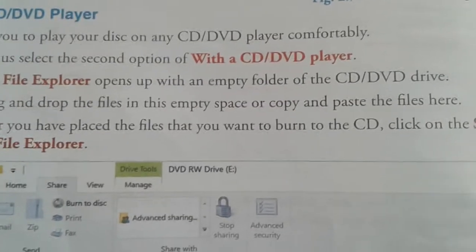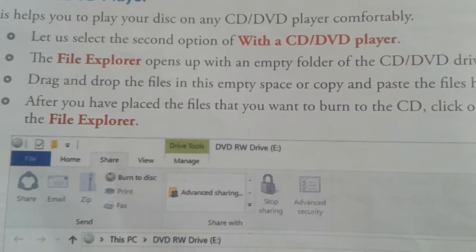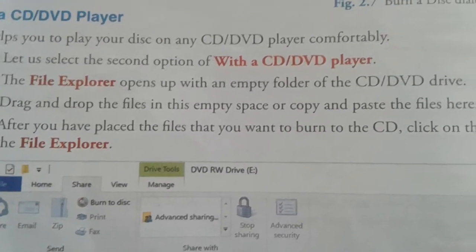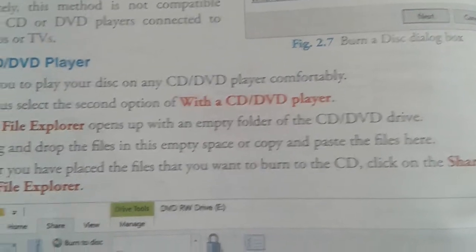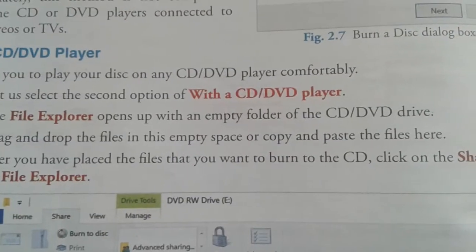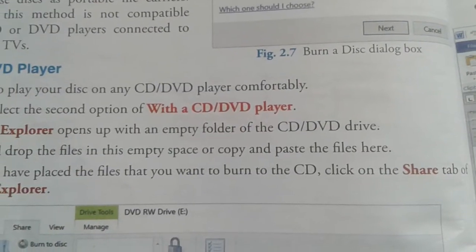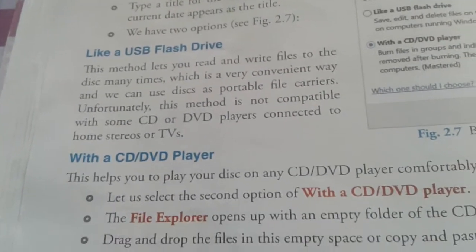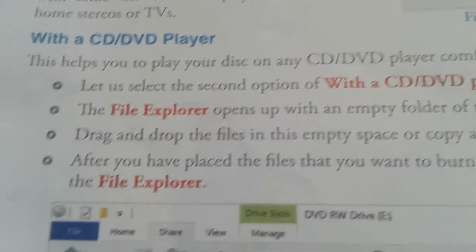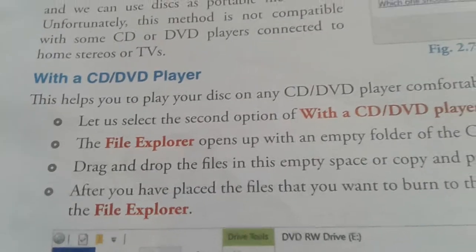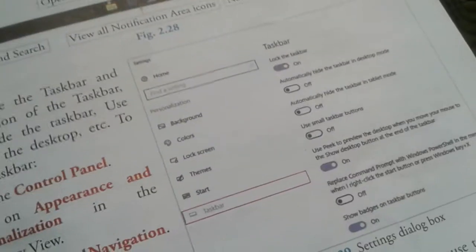Selecting the second option — with CD/DVD player — the File Explorer opens up with an empty folder of the CD or DVD drive. Drag and drop the files into this empty space, or copy and paste the files here. After placing the files you want to burn to the CD, click on the Share tab of the File Explorer. So the two options are: like a USB flash drive, and with a CD or DVD player.